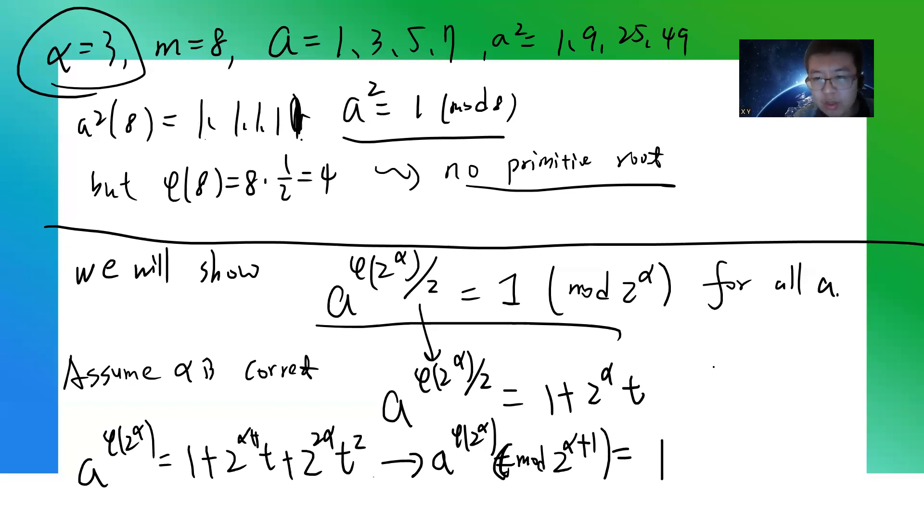Okay, but notice φ(2^(α+1)) is just 2 times φ(2^α). So this equation can be translated into a^(φ(2^(α+1))/2) ≡ 1 (mod 2^(α+1)).